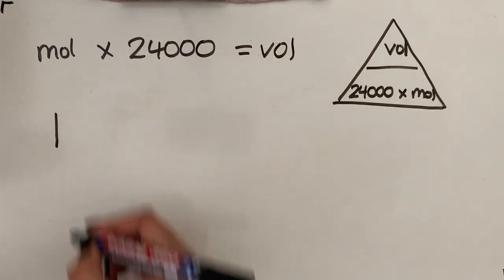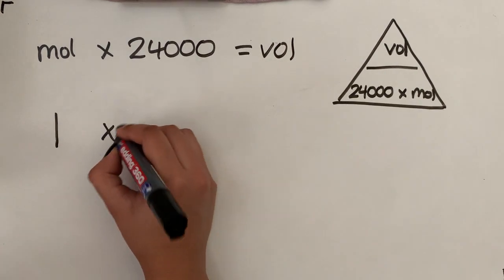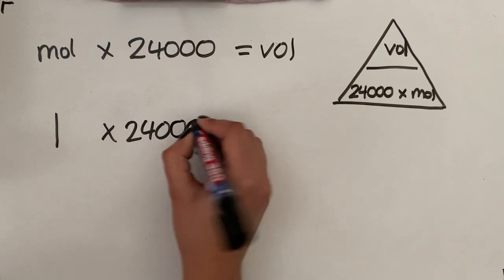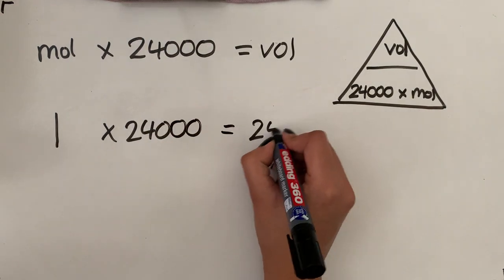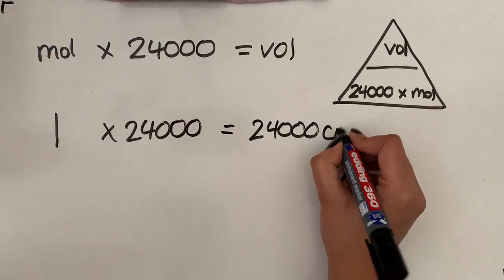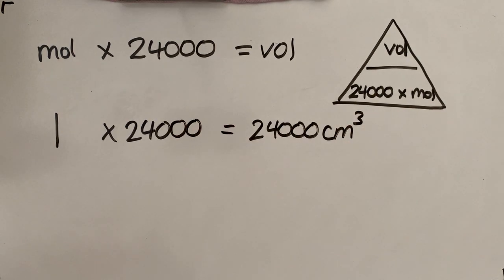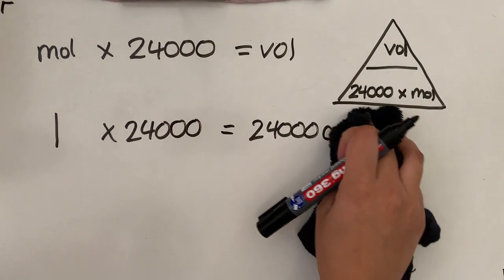So if we've got one mole of carbon dioxide, all we do is we times that by 24,000 and that's going to give us our volume, which is 24,000 centimeters cubed. If we keep going for any of them.